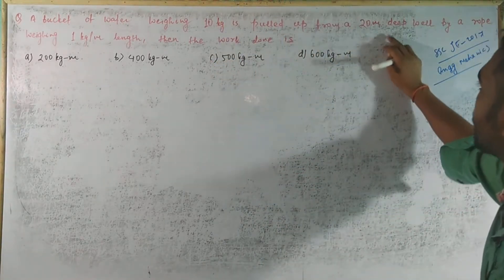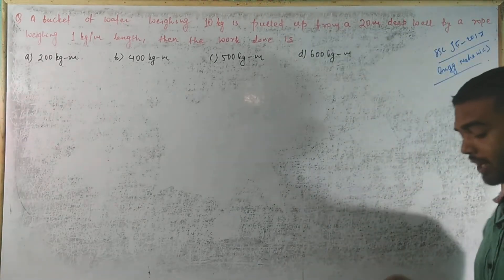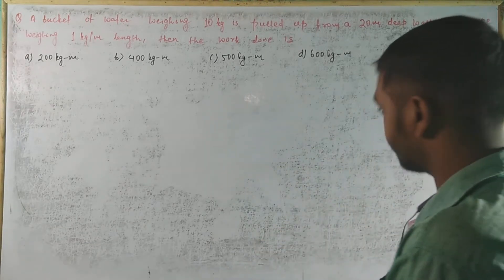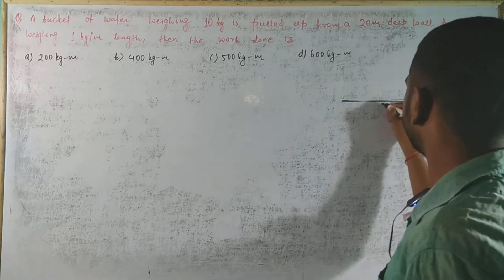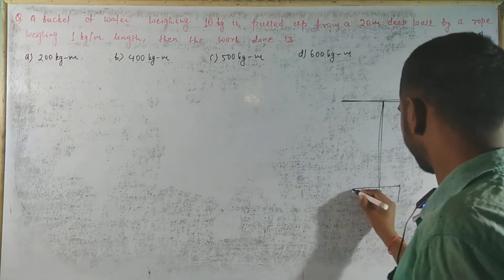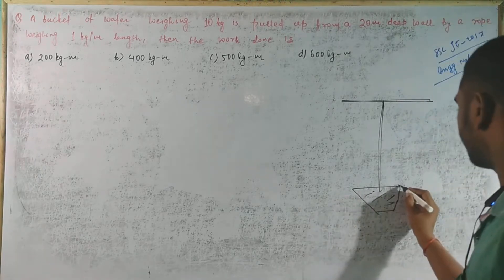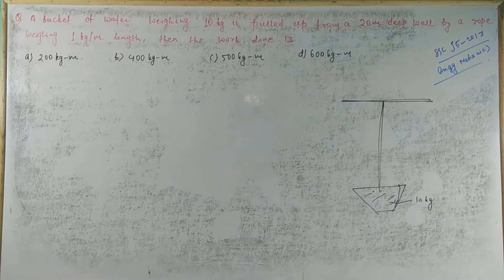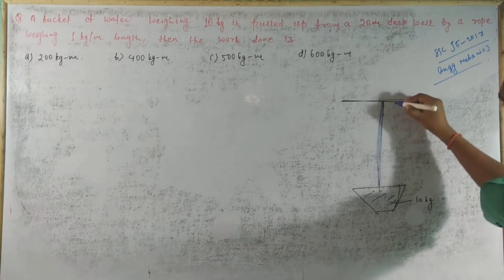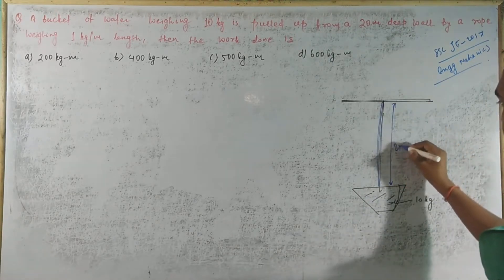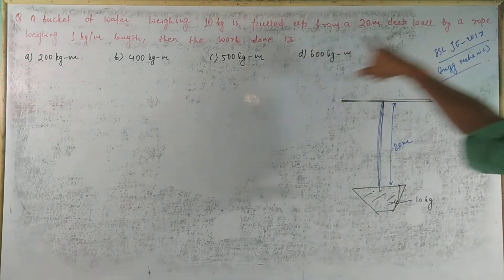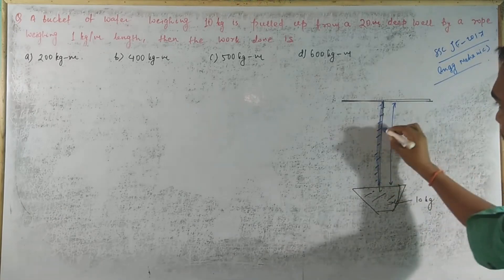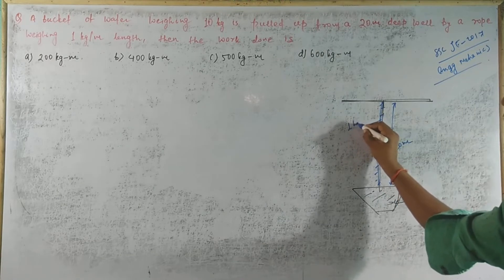The well is 20 meters deep — that is the distance, which is 20 meters. The rope weighs 1 kg per meter.